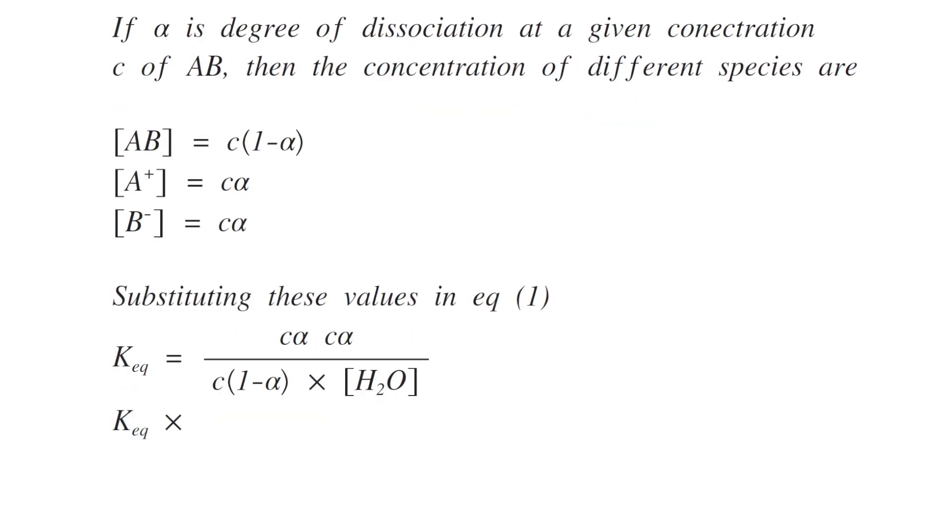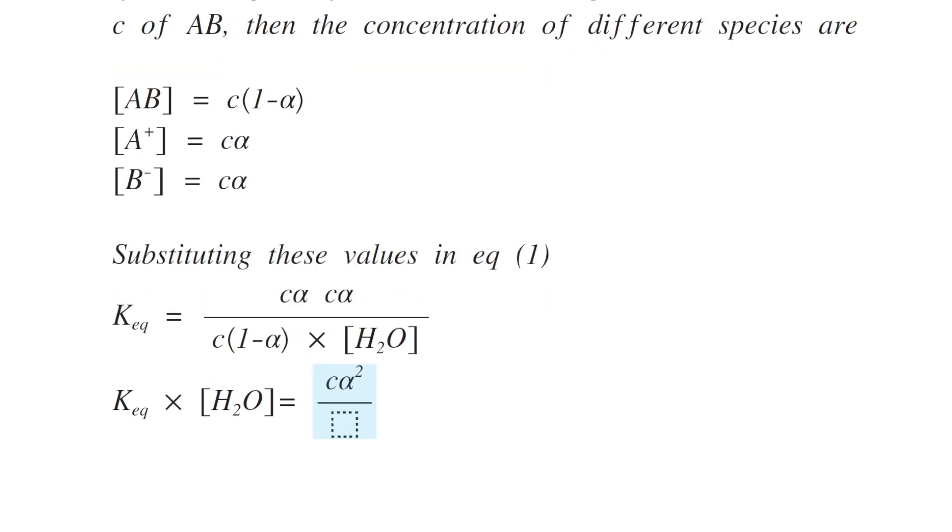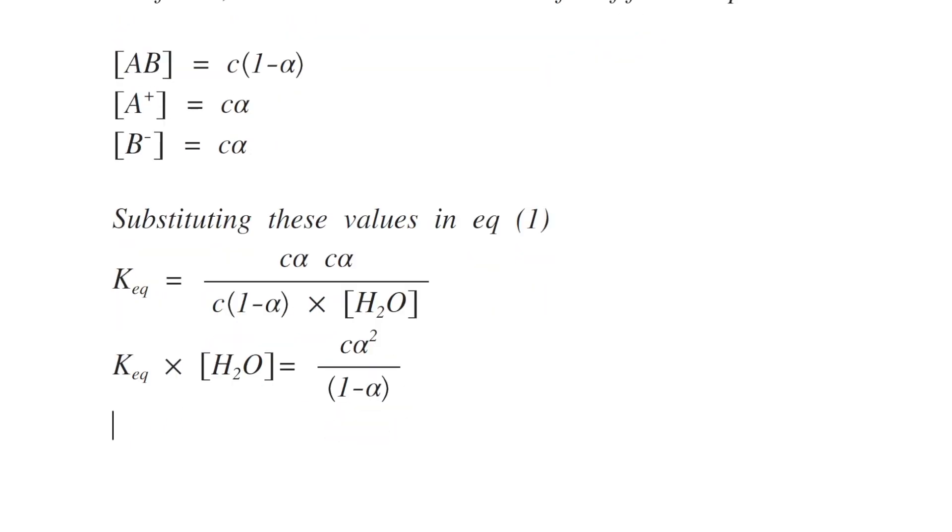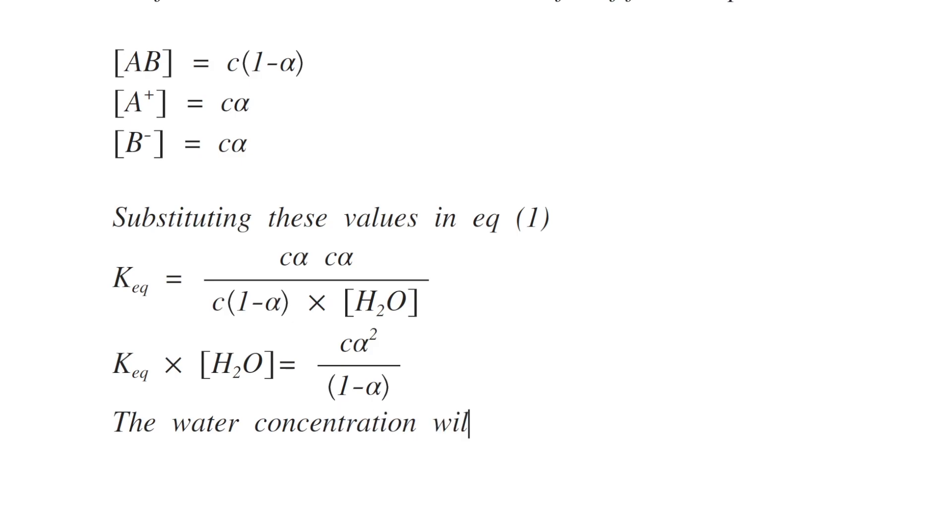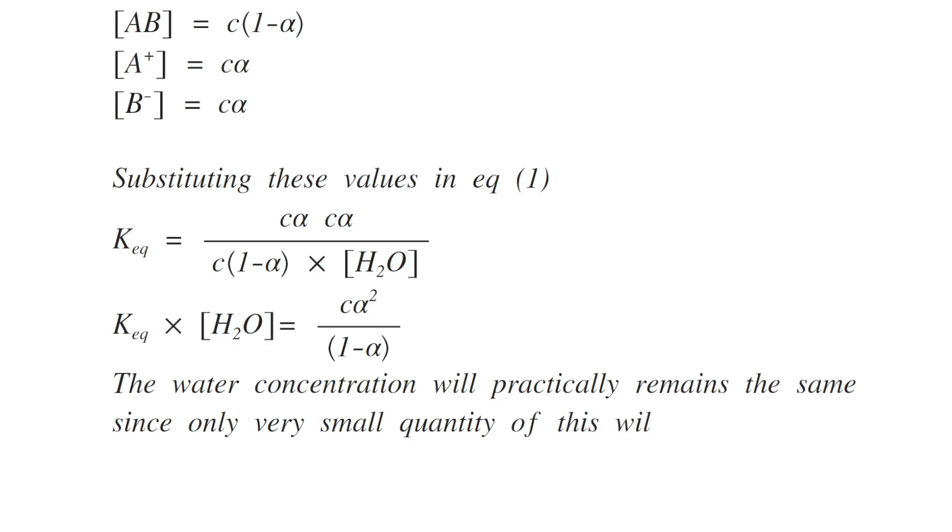As the concentration of water H2O remains constant throughout the reaction as it is a weak acid, so we can replace that with a new constant known as K dissociation.